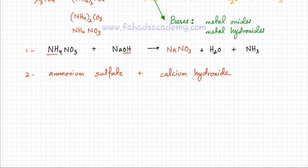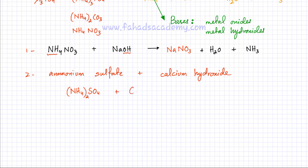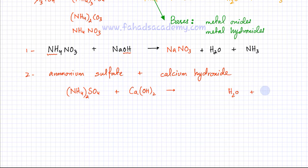Let's do the second reaction: ammonium sulfate reacting with calcium hydroxide. Calcium hydroxide is a metal hydroxide — that's a base. Ammonium sulfate is the ammonium salt. The formula of ammonium sulfate: NH4 is +1, SO4 is 2-, so using the crisscross method there are two ammonium ions — (NH4)2SO4. Calcium hydroxide: Ca is 2+, OH is 1-, so it's Ca(OH)2. Water and ammonia gas would be produced.